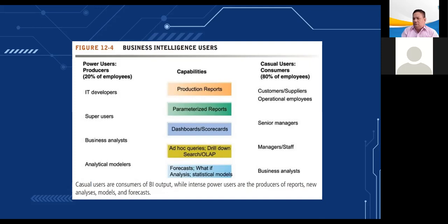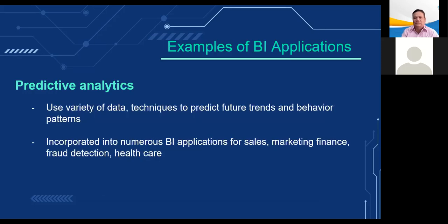This graphic looks at the different types of users and what they use business intelligence applications for. On the left, power users who rely on business intelligence most intensively are broken into four main categories, each placed beside the types of reports they use most. On the right, casual users are also broken into various categories placed along the type of capabilities used most. For example, senior managers rely most on parameterized reports and dashboards. Predictive analytics uses a variety of data techniques to predict future trends and behavior patterns, and is being built into mainstream applications for everyday decision making by all types of employees, especially in finance and marketing.